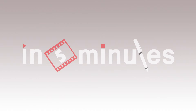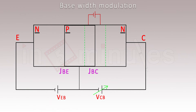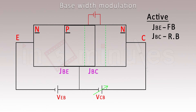Welcome to 'In Five Minutes.' Today's concept is Base Width Modulation. Consider an NPN transistor operated in active mode. Active mode means the base-emitter junction JBE is forward biased and the base-collector junction JBC is reverse biased. Looking at the diagram, the base is positive, so JBE is forward biased and JBC is reverse biased — this is the active mode of operation.